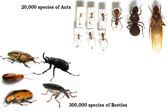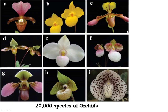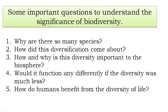In the introductory part it has been established that our earth contains a rich number of different plants and animals. For example, we have about 20,000 different species of ants, about 300,000 different species of beetles, 28,000 different species of fishes, and 20,000 different species of orchid plants.